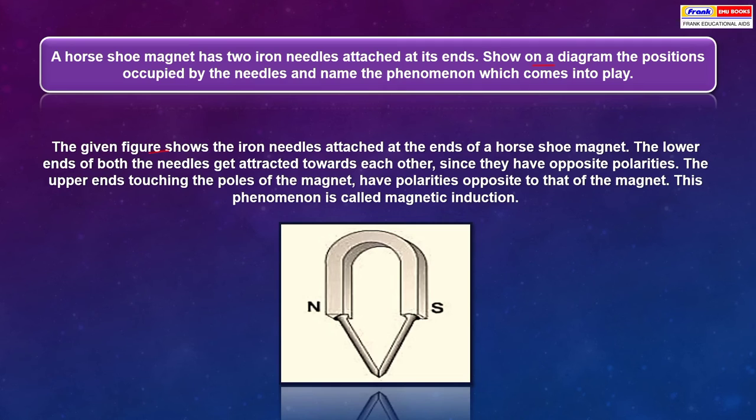The given figure shows the iron needles attached at the ends of a horseshoe magnet. The lower ends of both the needles get attracted towards each other since they have opposite polarities. The upper ends touching the poles of the magnet have polarities opposite to that of the magnet. This phenomenon is called magnetic induction.